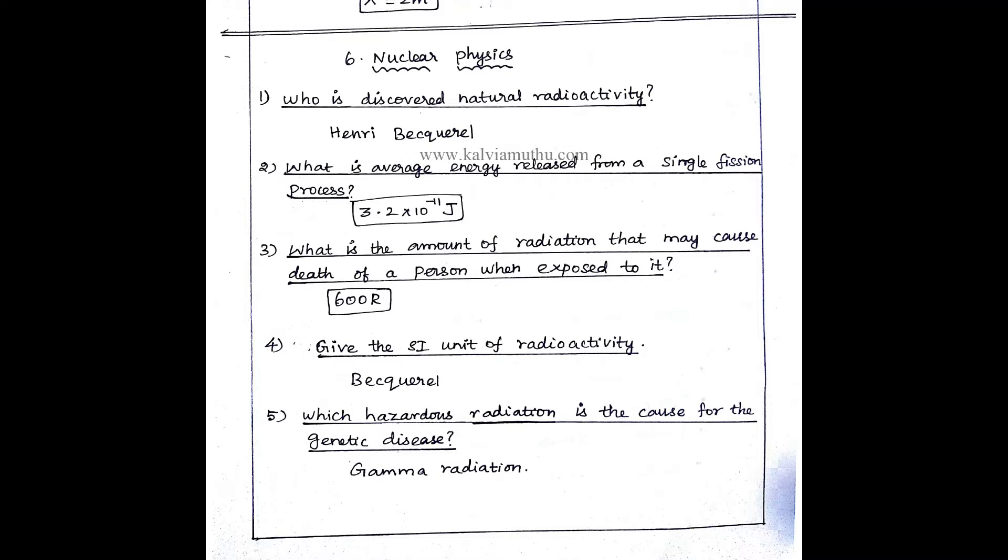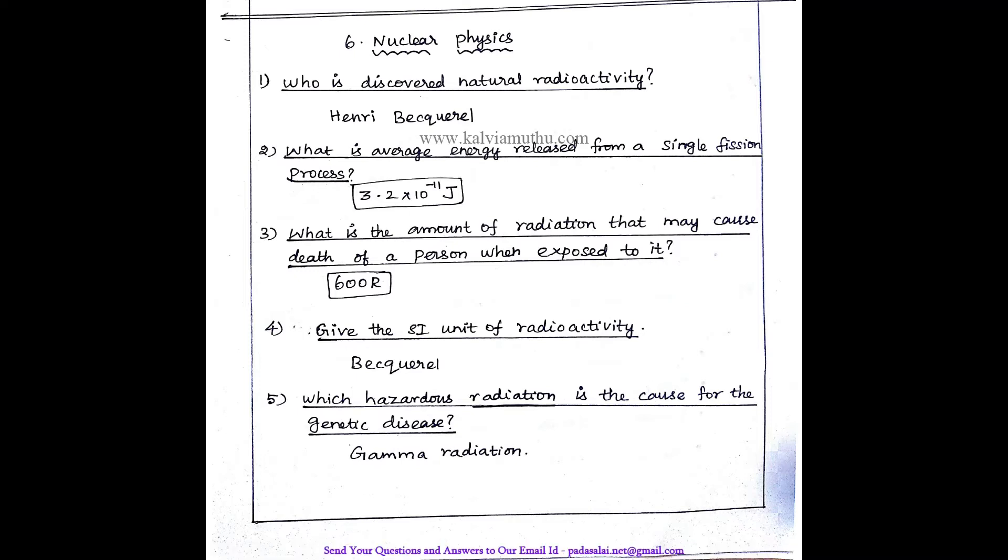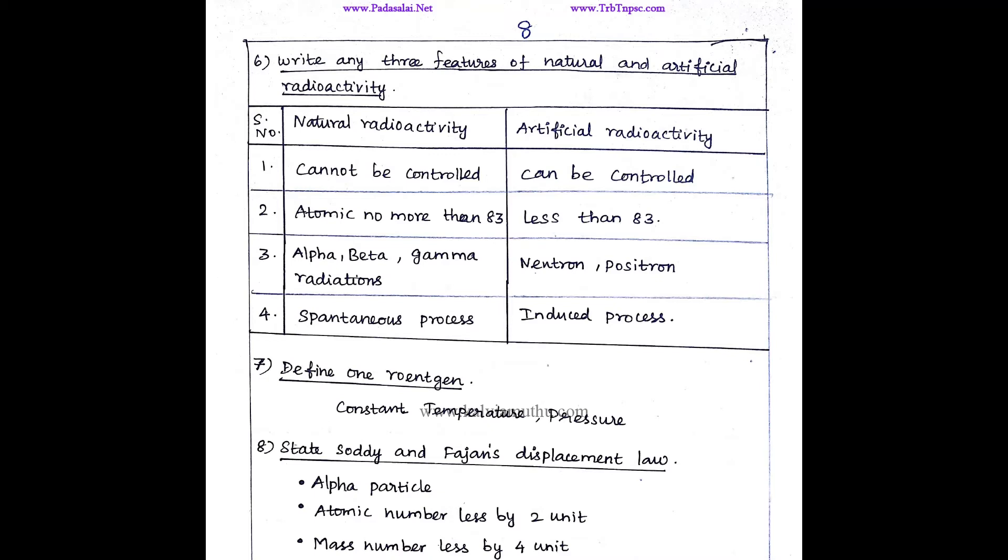Which hazardous radiation is a cause for genetic disease? We will say the gamma radiation. But artificial is produced, so it can be controlled.